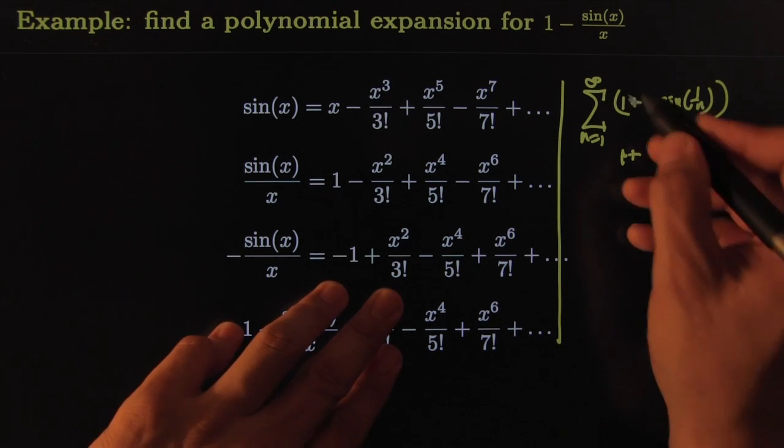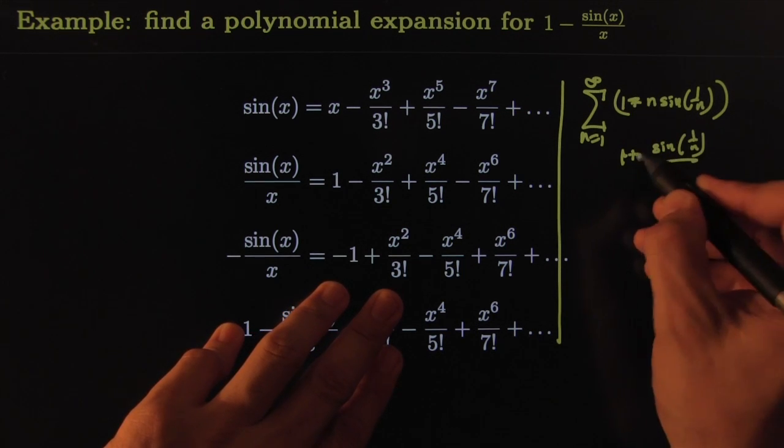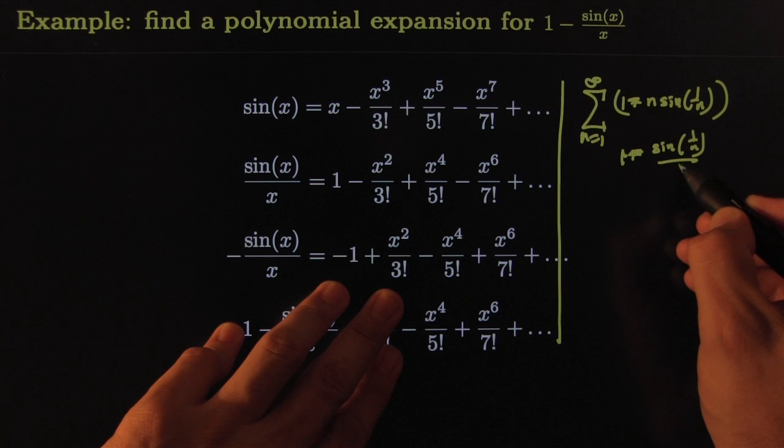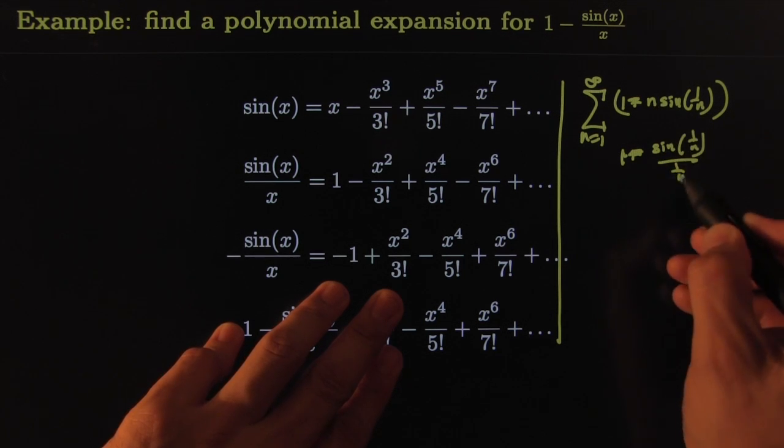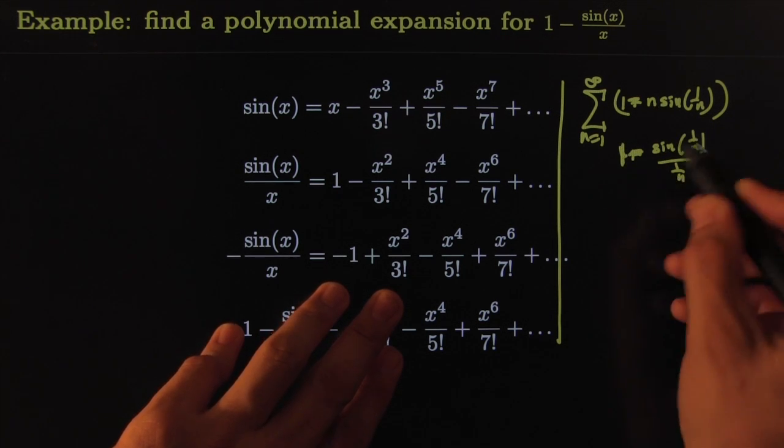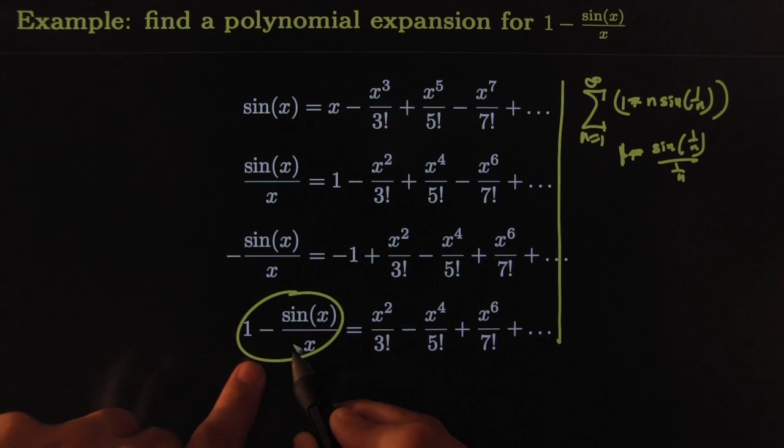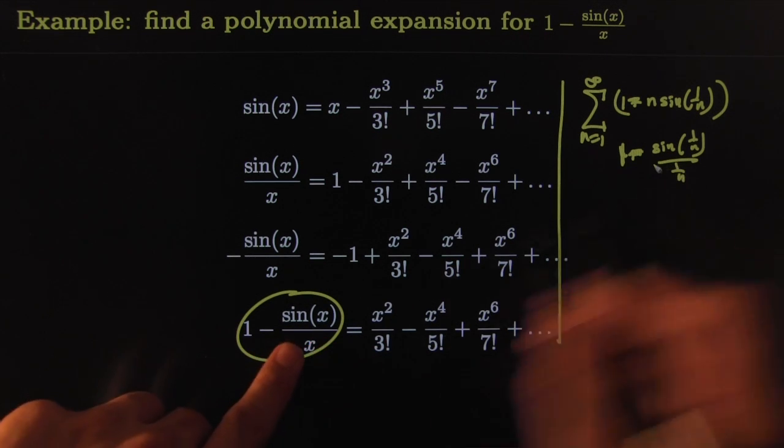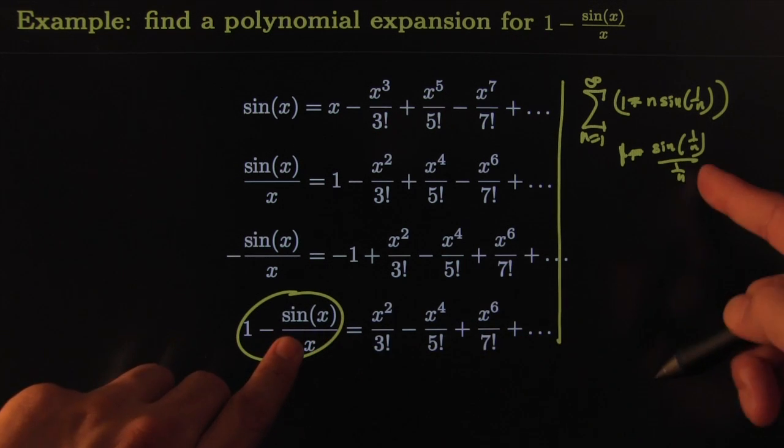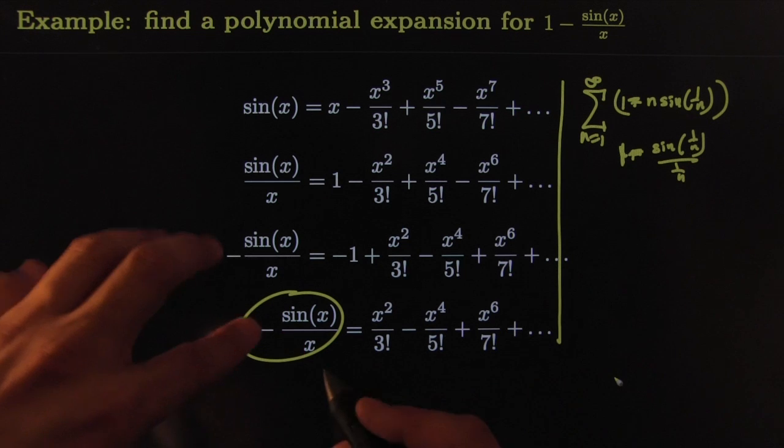Because you could rewrite it as (1 - sin(1/n))/(1/n)—actually, I think this was a minus, sorry—all over 1/n. This is just algebra: you put the 1/n on the bottom. And this expression looks a lot like this expression; they're almost identical, except here you have x and there you have 1/n.